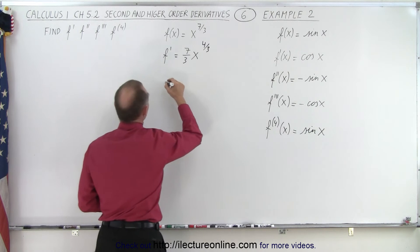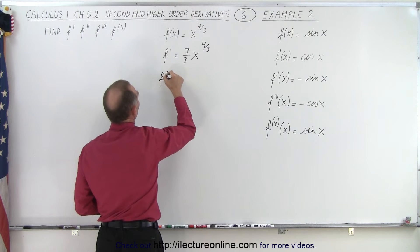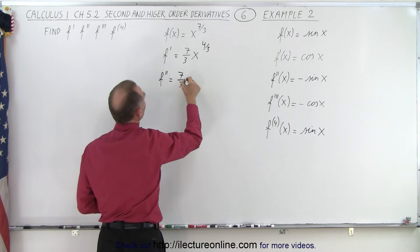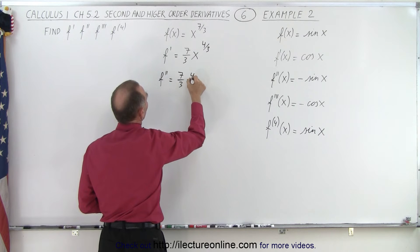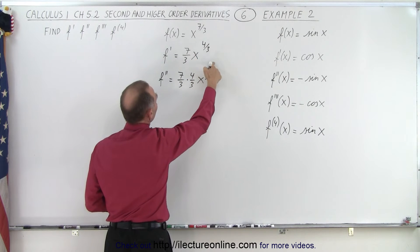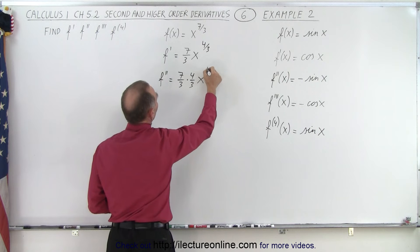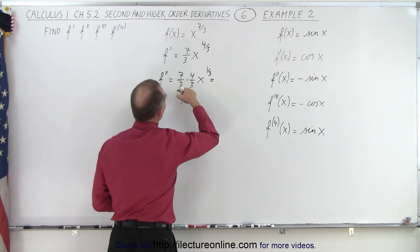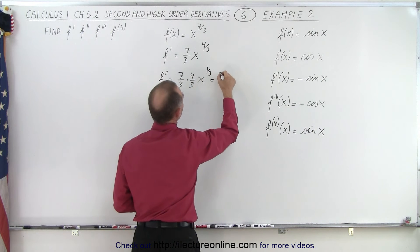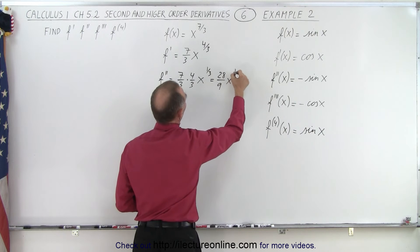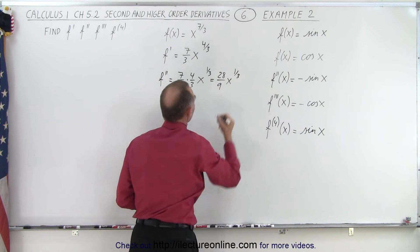Then I have f double prime, that's equal to seven over three times four over three, x to the four-thirds minus one, which is one-third, which is equal to 28 over nine, x to the one-third.